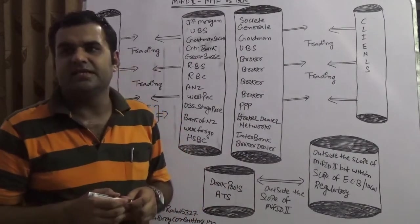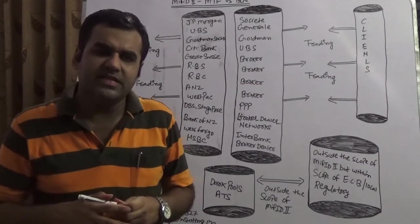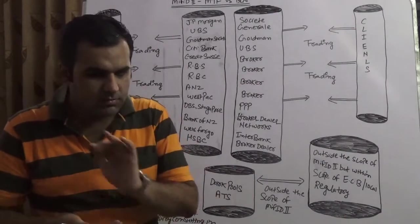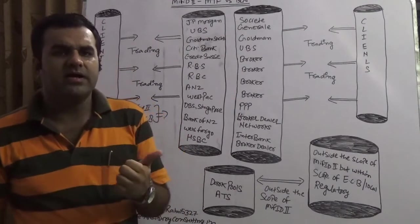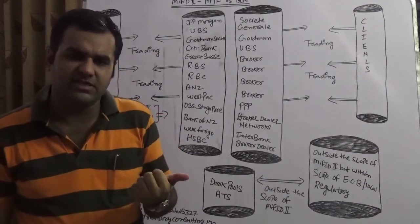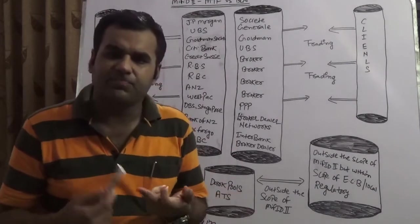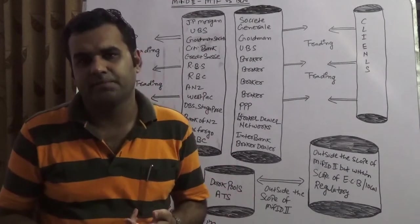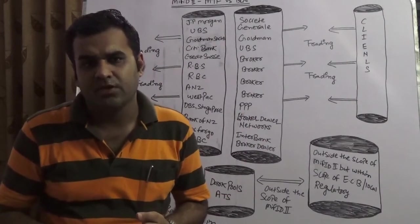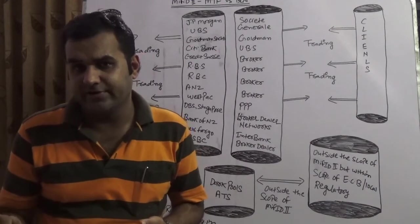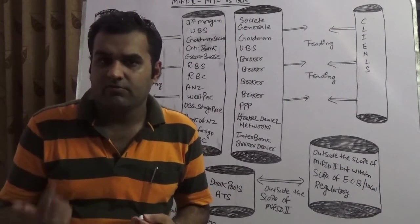On the other hand, if we talk about the broker crossing networks where there is a discretion right, this is outside the scope of MIFID 2nd. I fail to understand why BCN is not in the scope of MIFID 2nd because MIFID 2nd is saying there could be three markets: MTF multilateral trading facility, OTF organized trading facility, and RM which is regulated market.